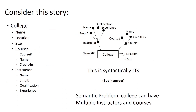If you weren't as good at data modeling as I know you already are, this might be what you came up with. You read through this story, heard about colleges, and think that's probably an entity. Then you heard about instructors, courses, names, qualification, and experience, and those all sound like attributes — maybe all attributes of the college. If you modeled it this way, this is syntactically okay. We've used all of our ER grammar, all the little dots and things to represent attributes, and this is syntactically correct.